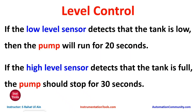Let's look at the example first. Level control: if the low level sensor detects that the tank is low, then the pump will run for 20 seconds. If the high level sensor detects that the tank is full, then the pump should stop for 30 seconds. We will use normally open contacts for both sensors and a timer known as TP (Time Pulse).